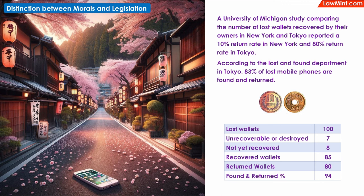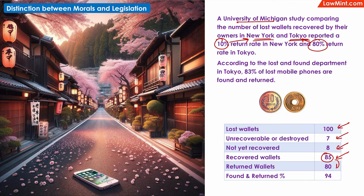When you have some time, just Google about the lost and found system in Japan and you will find some fascinating facts and statistics. A study by the University of Michigan apparently showed that while only about 10% of lost wallets are eventually recovered by their owners in New York, up to 80% are recovered by the people in Japan. I did some rough calculations: if 100 wallets are lost, around 7 would have been unrecoverable or destroyed, around 8 are still lying somewhere and not yet recovered, so of the 100 lost wallets perhaps only 85 were actually recovered — and of these, 80 were returned. This is the 80% that the study arrived at. If 80 were returned out of 85, then that would mean that 94% of the people in Japan are very honest.